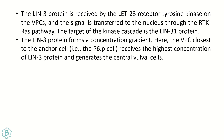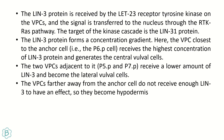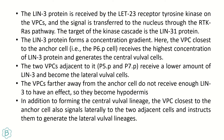The VPC closest to the anchor cell — p6p — receives the highest LIN-3 concentration and generates the central (primary) vulva lineage. P5p and p7p receive lower LIN-3 and form the lateral (secondary) vulva lineages. VPCs far from the anchor cell receive no LIN-3 and form hypodermis. Additionally, the primary VPC signals lateral inhibition to adjacent cells, instructing them to generate the secondary vulva lineage.